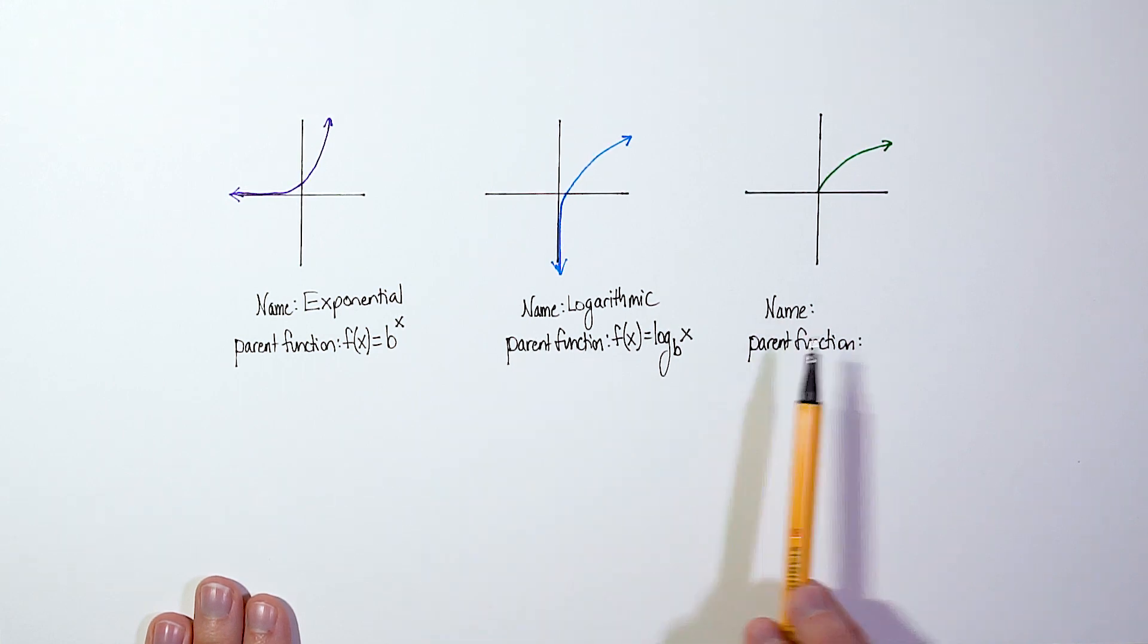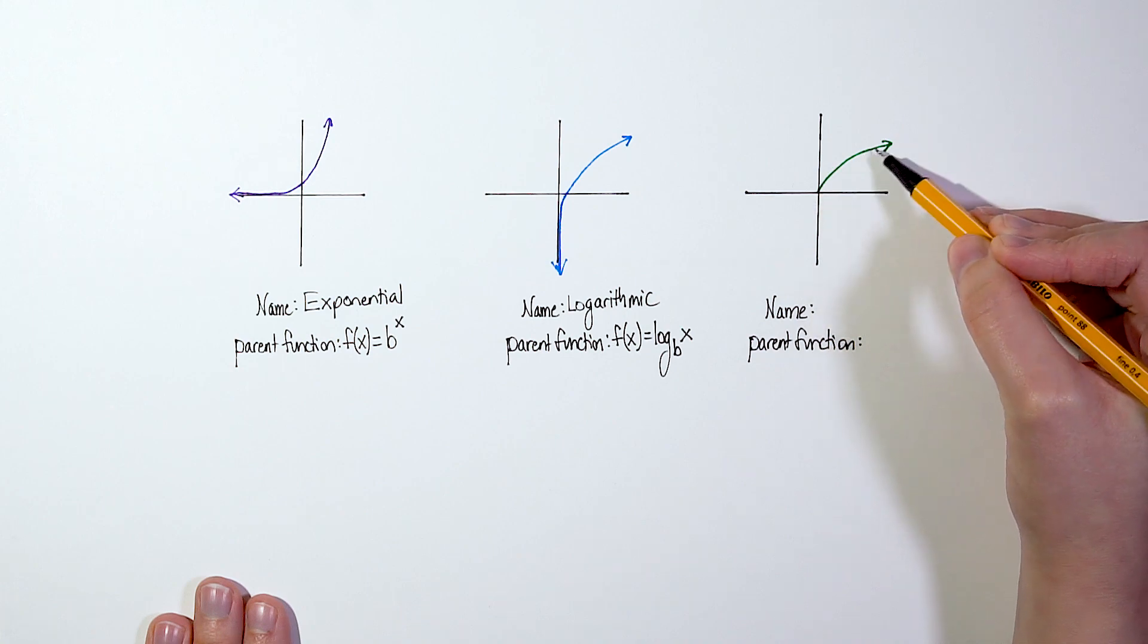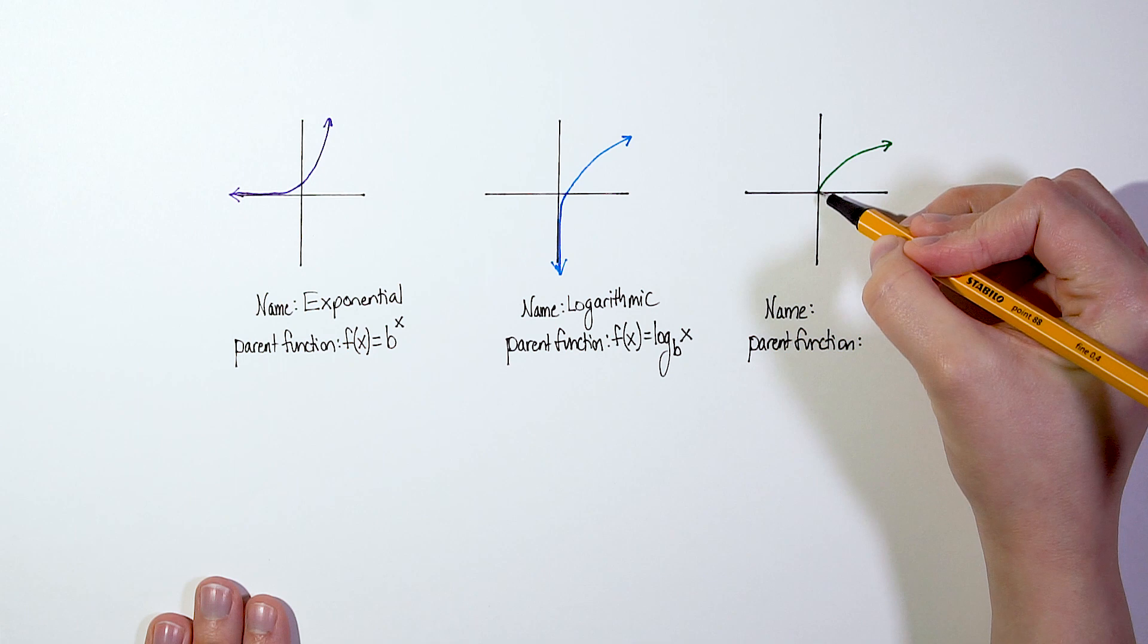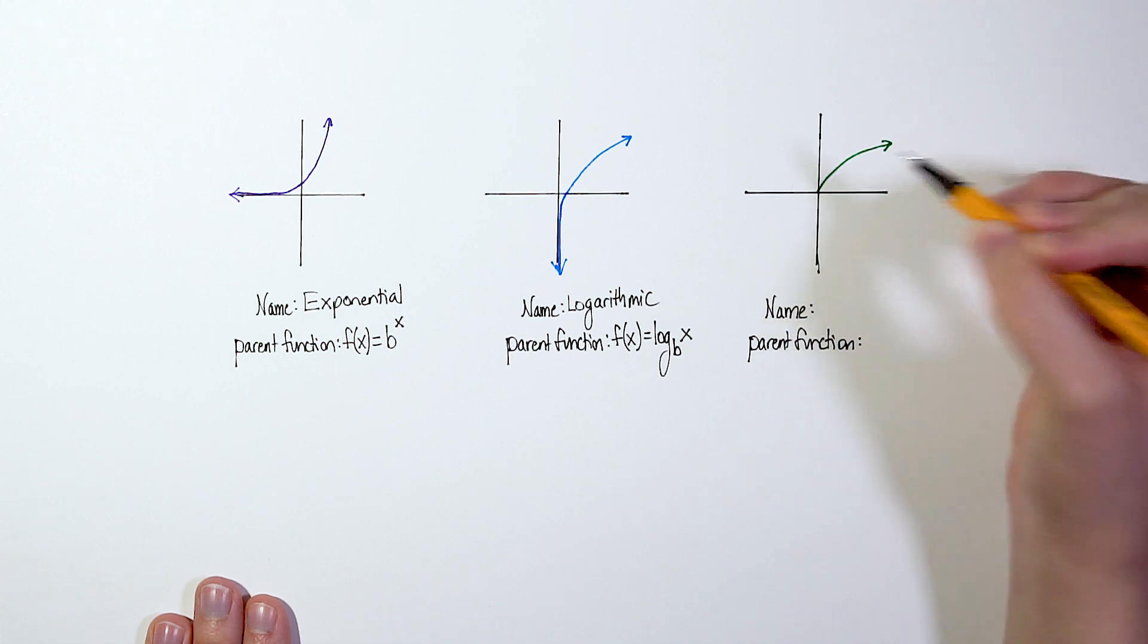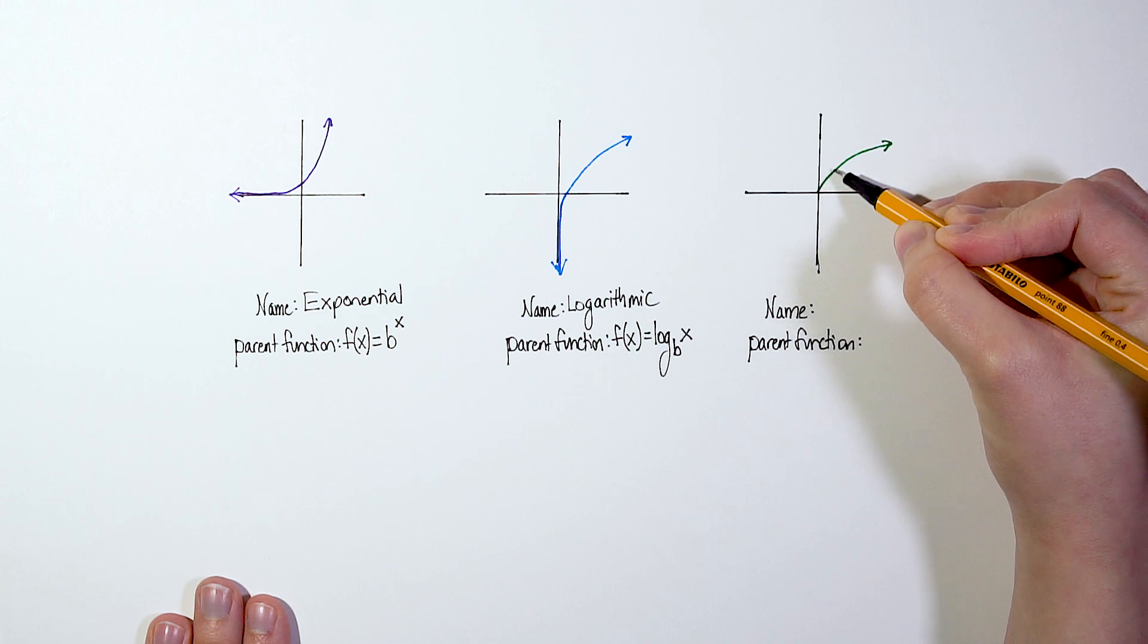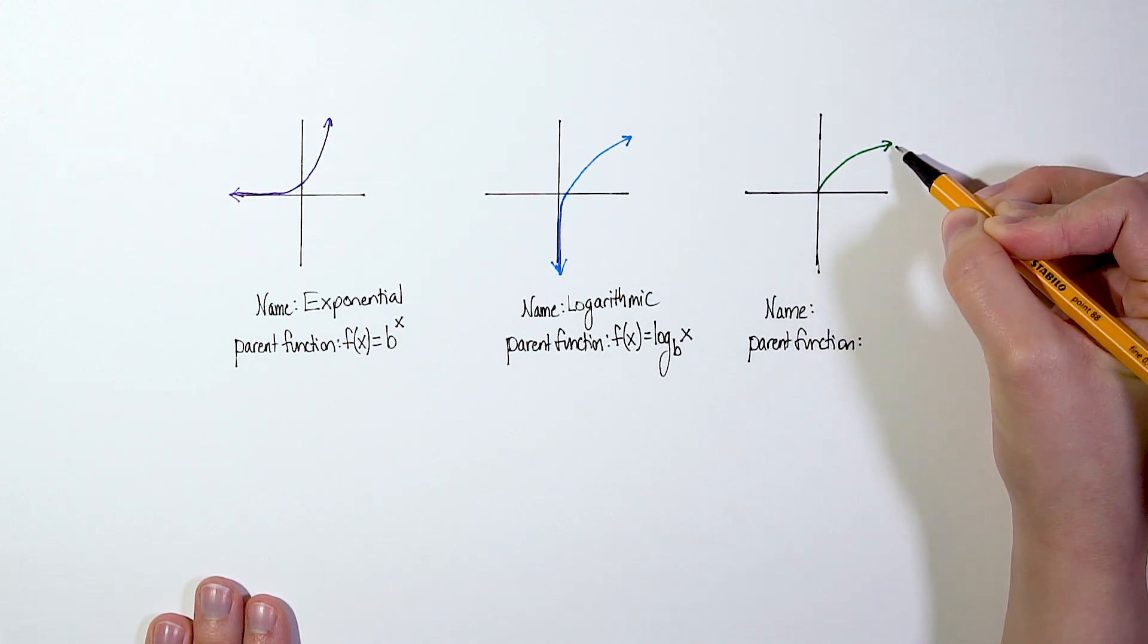And then this last graph, we're going to talk about the green graph here. This one, notice it's got a similar curve. But notice this one doesn't have an asymptote line. So this doesn't continue down, it just stops. And in this particular graph that I've drawn, it starts right at the zero, and then it moves in this upward curved direction. But it doesn't continue down here, approaching any line.